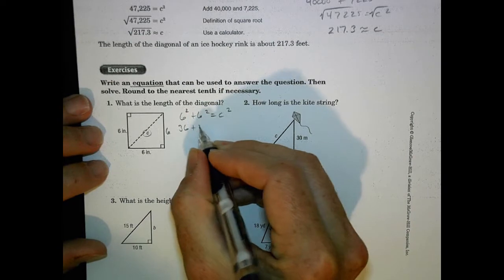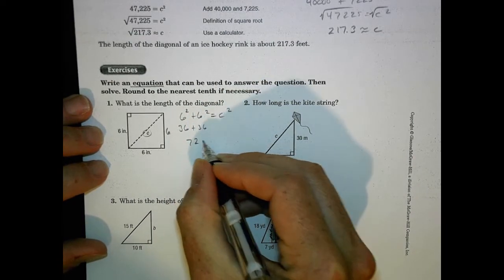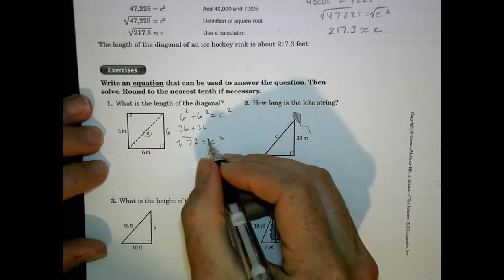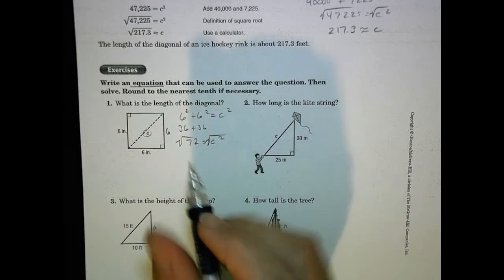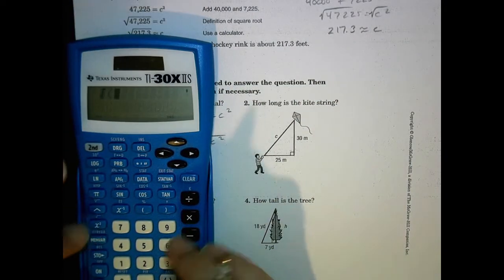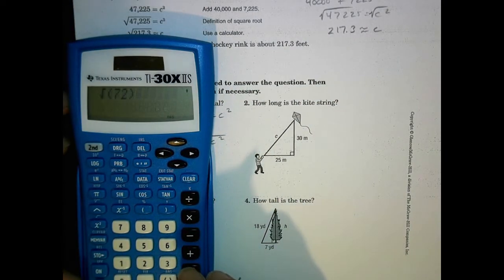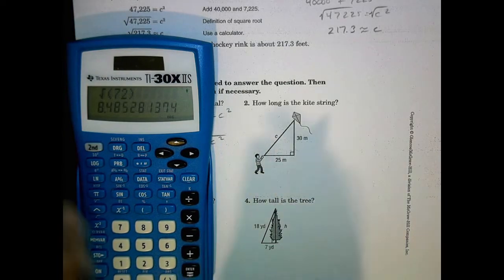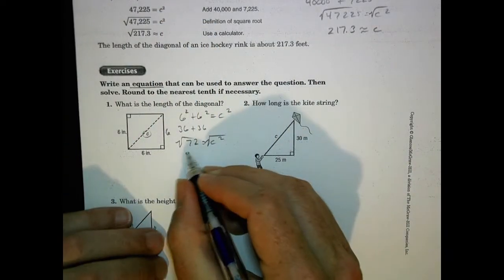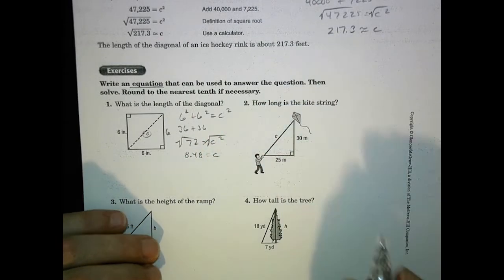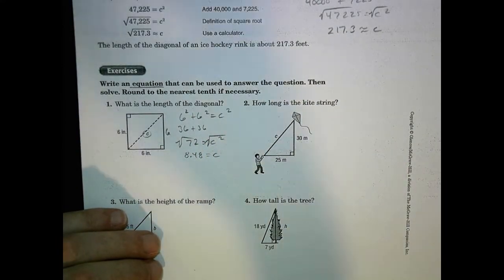So then I'm going to do 36 plus 36 and that's 72 equals c squared. Take the square root of both sides and again, I'll just put that in my calculator here. 72 square root of 72 is going to be equal to about 8.48 is the value of c.